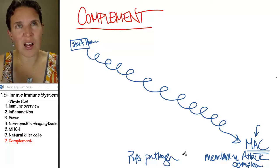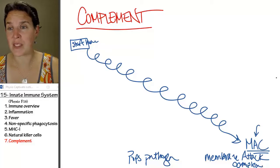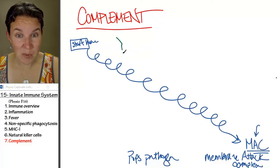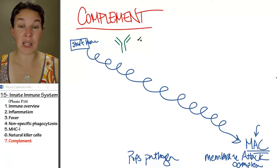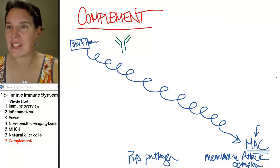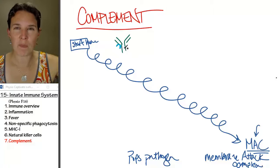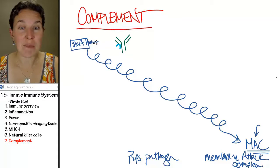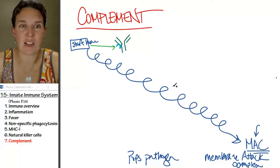The membrane attack complex pops the pathogen, and it's a general thing. Here's what's really interesting: something initiates complement. You can actually have antibodies initiate complement. Remember what antibodies look like? We've seen them already when we talked about blood typing. Antibodies have this little place, like a little receptor zone in their armpit, and that actually binds with one of the first chemicals in the complement cascade and can initiate the cascade.